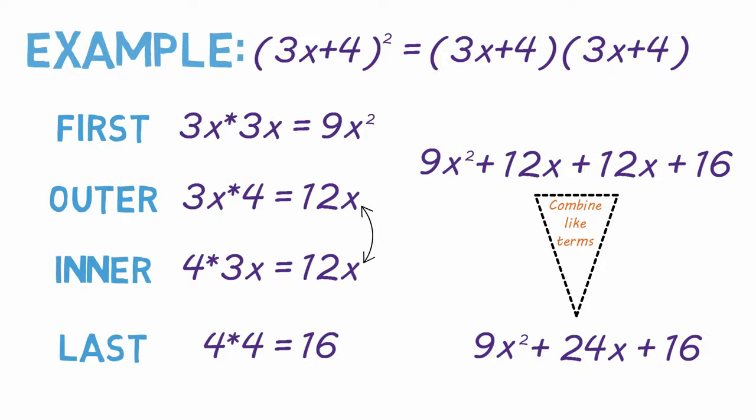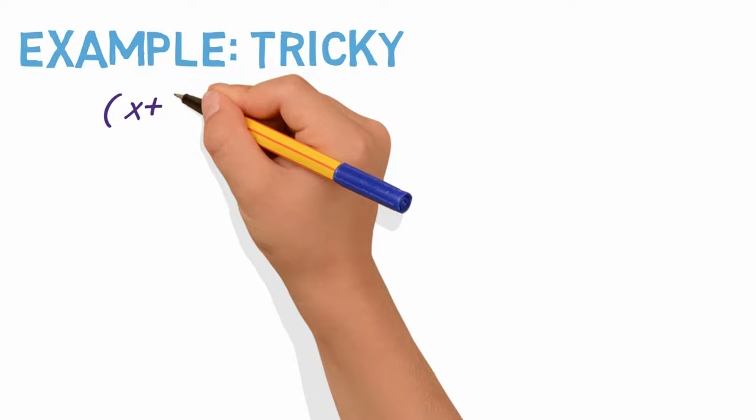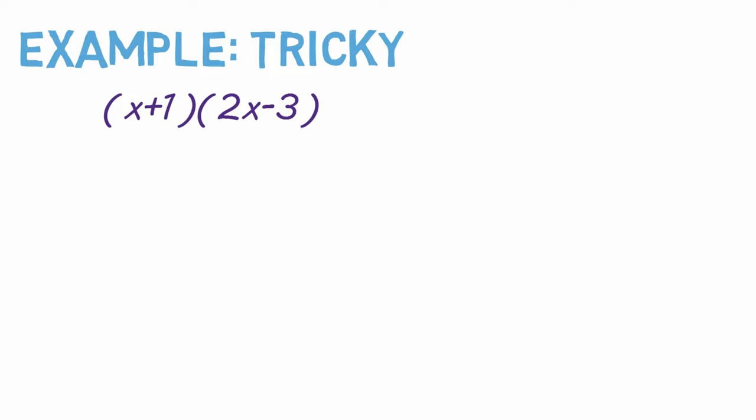Another tricky situation is when negative numbers are involved. For example, x plus 1 times 2x minus 3. Don't panic. Just use the FOIL method. And whenever you use this 3, it should always be negative.